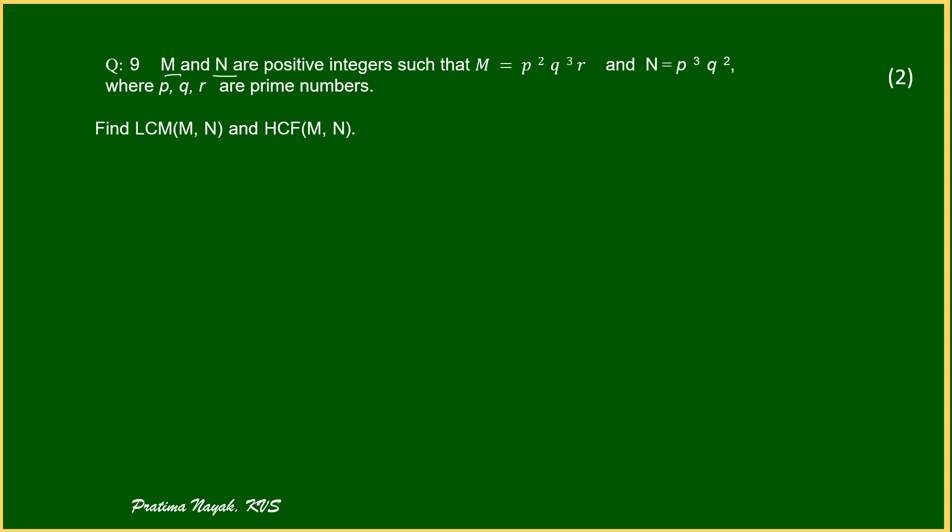Question is, m and n are positive integers such that m is equal to p square q square r and n is p cube q square, where p, q, r are prime numbers. That means m and n are written as prime factorization. You have to find LCM of m and n. You have to find HCF of m and n. It carries two marks.